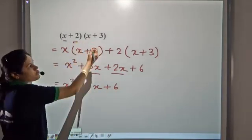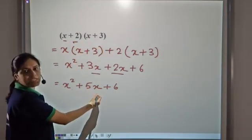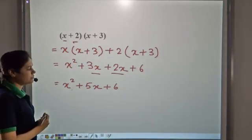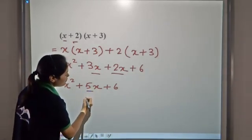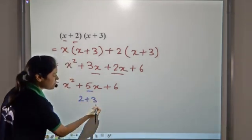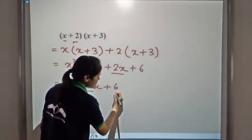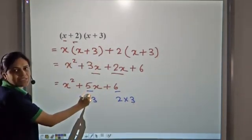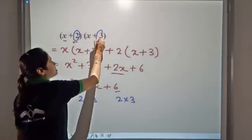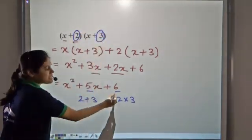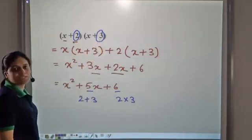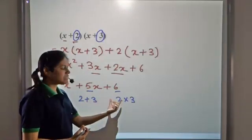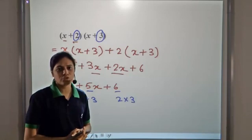So (x+2)(x+3) gives us x²+5x+6. Now observe an important thing: 5 is equal to 2+3, and 6 is equal to 2×3. So 5 is the sum of these two terms and 6 is the product of these two terms. So is there something special about this expression, or does it hold in general?